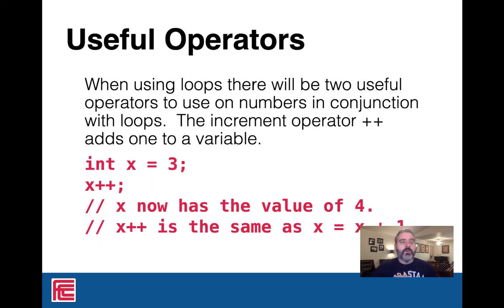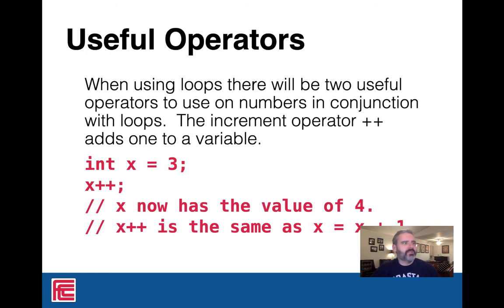Before we get to loops, we're going to talk about a few useful operators when using loops. We could have covered this with the operators before, but it's early days. So we might as well introduce them as we need them. We're going to introduce the ++ operator. C++ is based on a language called C. ++ is the increment operator — it adds one to a number. So C++ is just C incremented by one. There is no C 2. It's just C and C++.